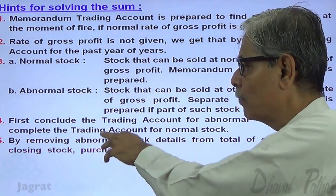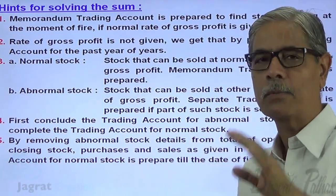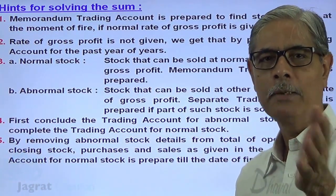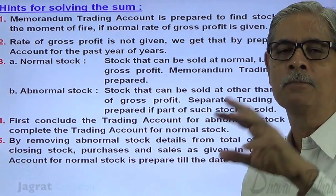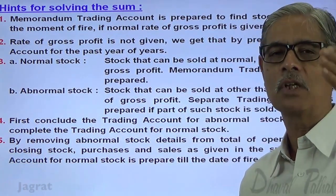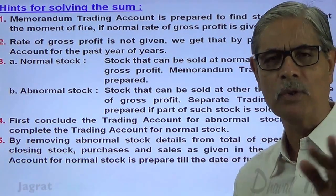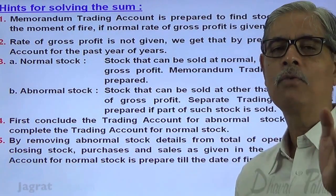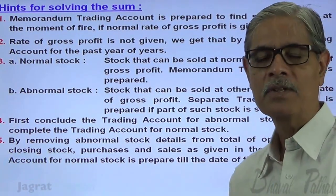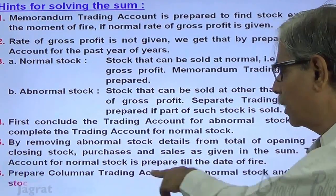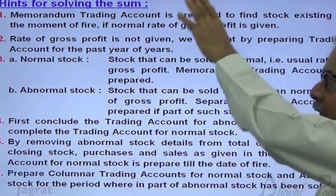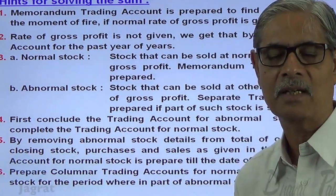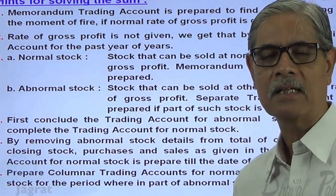For the purpose of preparing a trading account for normal stock, if you are given the details of total sales, total opening stock, and total purchases in the sum, remove the opening stock of abnormal stock, purchases of abnormal stock, and sales of abnormal stock. All those details of abnormal stock should be removed from the totals, and you will get the normal stock figures. This is the theory to be used for solving the sum, which we will now start.